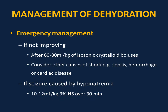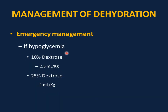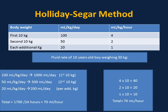For hypoglycemia, use 10% dextrose and give 2.5 ml per kg as a bolus, or use 25% dextrose and give 1 ml per kg as a bolus. Calculation of maintenance IV fluid uses the Holiday-Segar method by body weight: for the first 10 kg, multiply by 100 ml per kg per day; the second 10 kg by 50 ml per kg per day; each additional kg by 20 ml per kg per day. Divide the total by 24 hours to get the hourly rate.